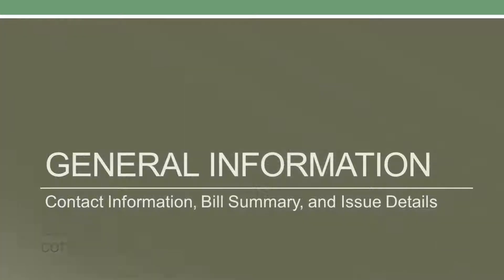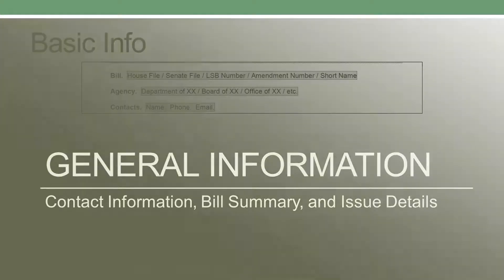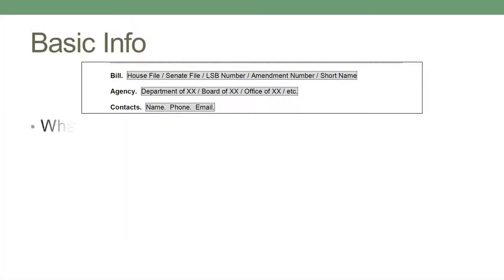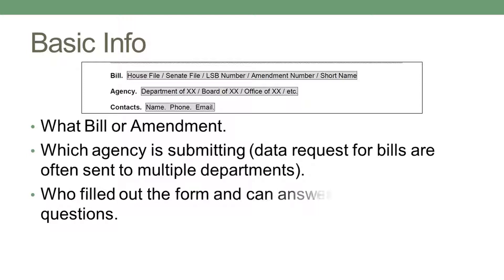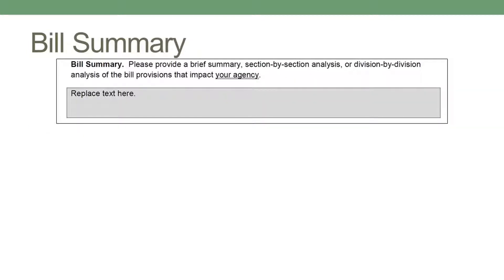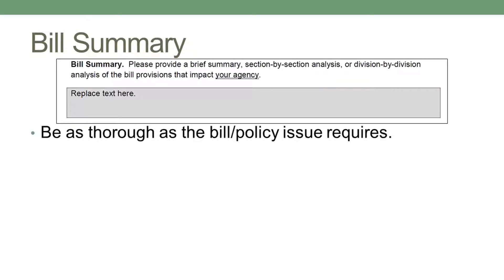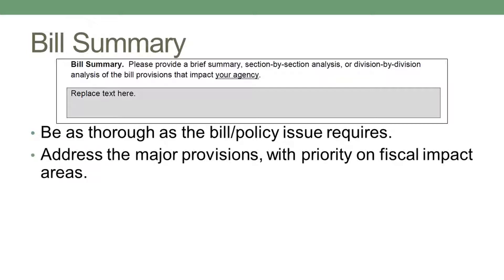The first response areas on the form cover basic information. Fill in the bill number and maybe a title associated with the request, the name of your agency, and your contact information. The first major area of the form is the bill summary. For this part, be as thorough as the bill or policy area requires. Be sure to address the major provisions with a priority on areas that have a fiscal impact later in the form.